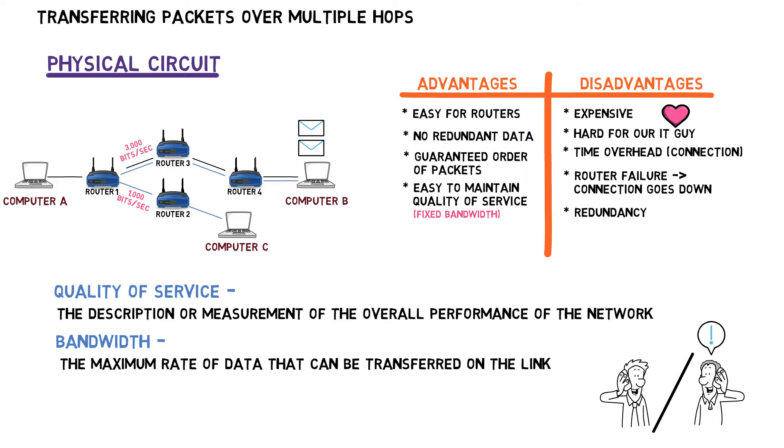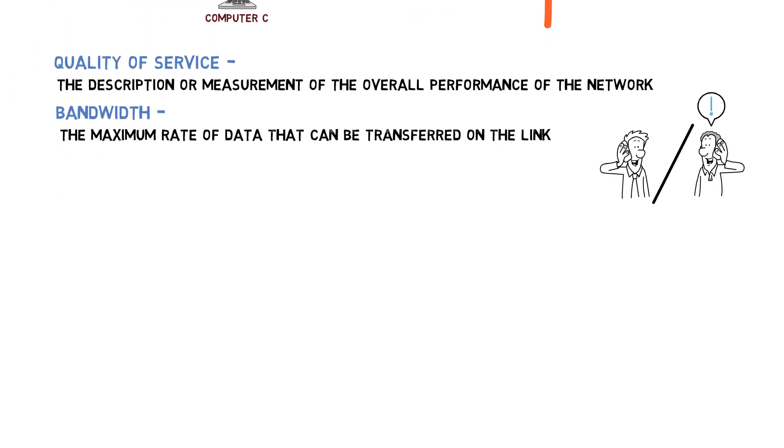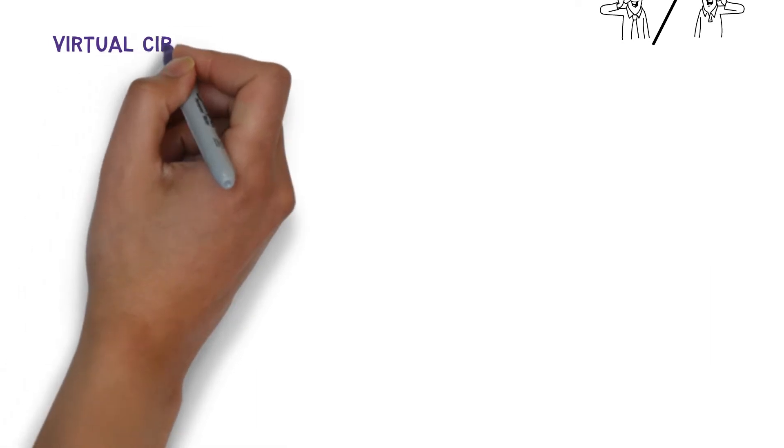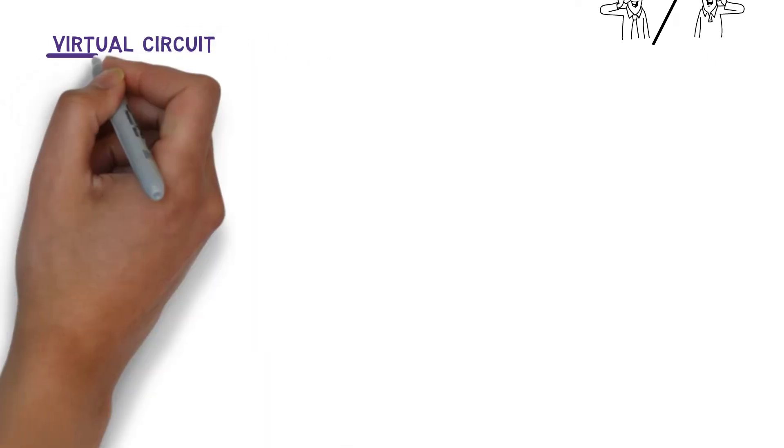Now let us consider an alternative model: virtual circuit. In virtual circuit networks, we also have to establish a connection prior to sending data. But this time, establishing a connection is done virtually rather than physically. Cables are already connecting all the devices and we don't need to touch them. Computer A wants to send a message to computer B, so a new connection must be established. This connection is virtually created and assigned a circuit identifier — for example, 7.